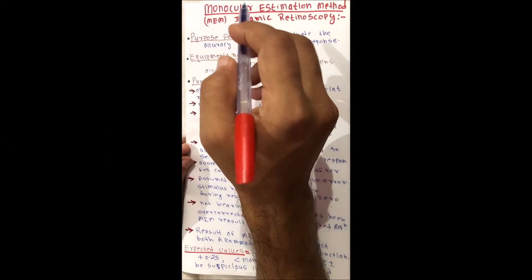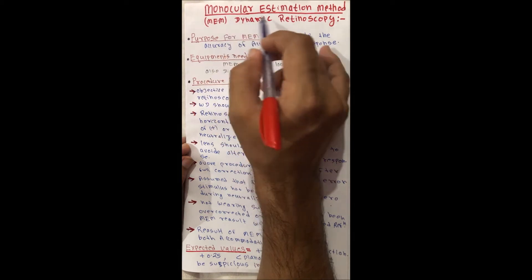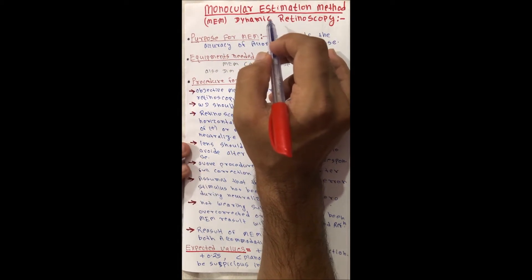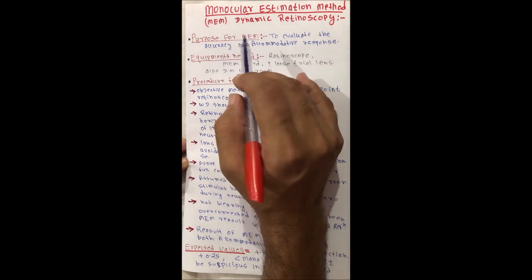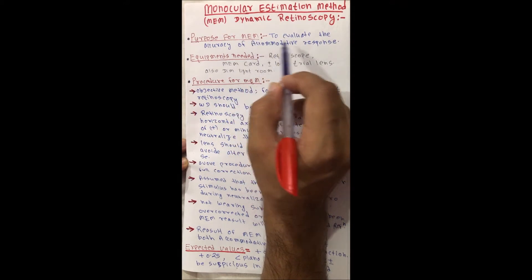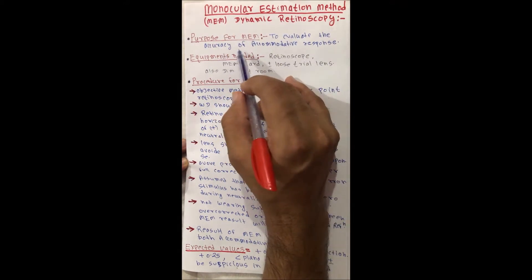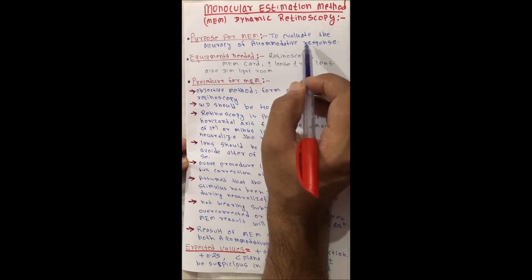Hello everyone, today I am going to talk about Monocular Estimation Method or Dynamic Retinoscopy, or MEM. The purpose of monocular estimation method is to evaluate the accuracy of accommodative response, that is whether the accommodation is lag of accommodation or lead of accommodation.